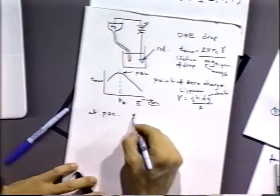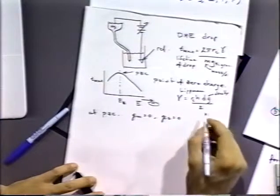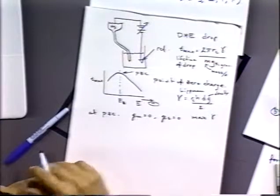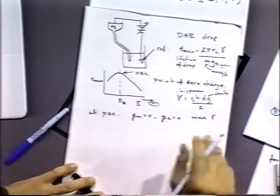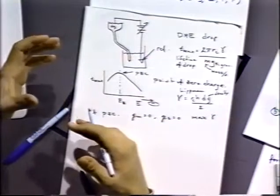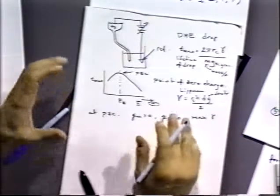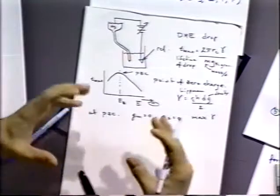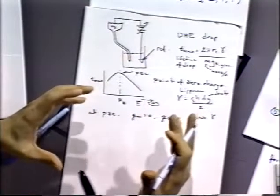Hierofsky, in inventing the dropping mercury electrode for this purpose, realized its other analytical advantage. Now at the PZC, the charge on the metal is zero, the charge in solution is zero, and we have a maximum in our surface tension γ (lambda). As we go away from the PZC, we start to build up charge in the solution and in the metal, and that charge on the metal tends to reduce the surface tension — the charged ions on the electrode surface repel each other, and that repulsion weakens the surface tension.